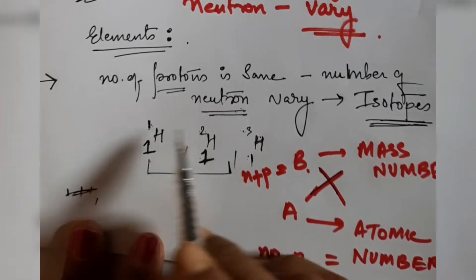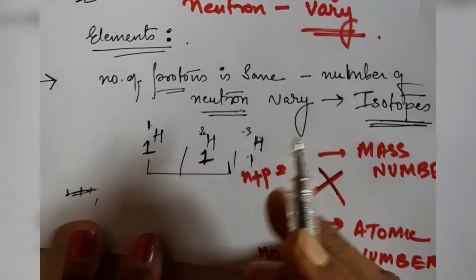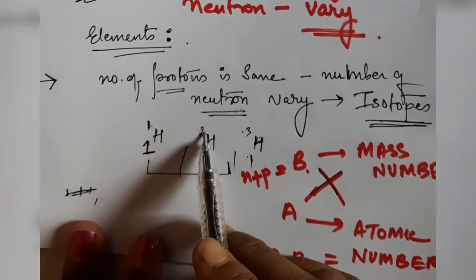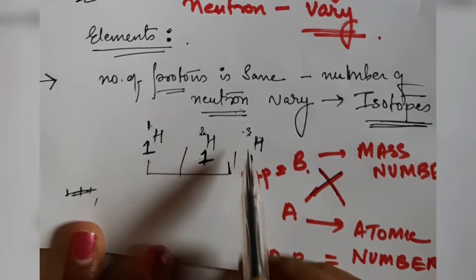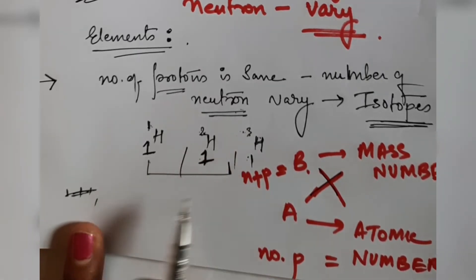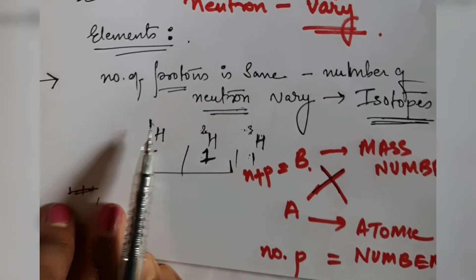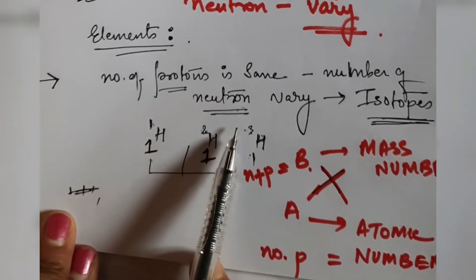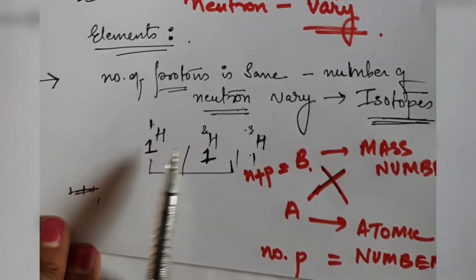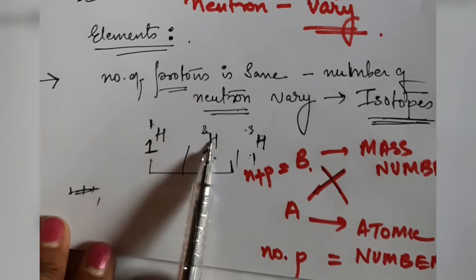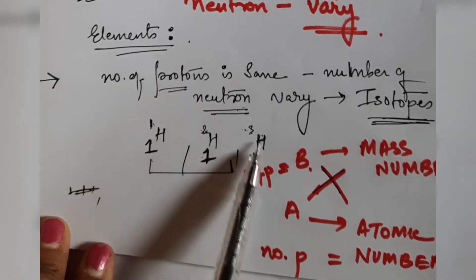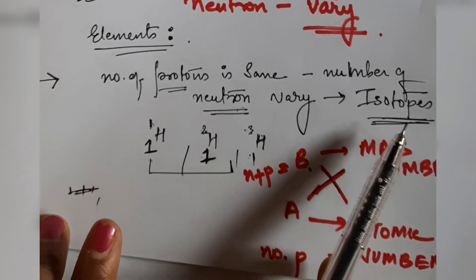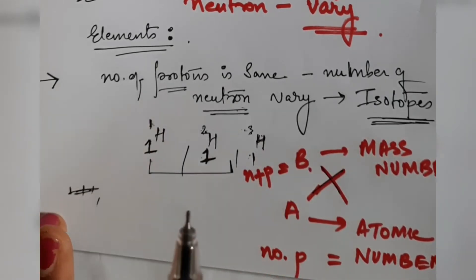In ¹₁H there is no neutron; in ²₁H there is one neutron; in ³₁H there are two neutrons. So the number of protons is the same but the number of neutrons is varying. In that case we say these are isotopes of the same element — they are all hydrogen, just different isotopes.